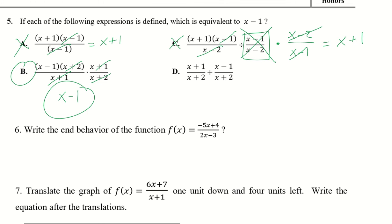To verify, option d uses addition so we cannot eliminate anything. The denominators are the same, giving x plus 1 plus x minus 1 all over x plus 2, which equals 2x over x plus 2 — not x minus 1.